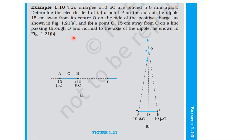From the textbook, topic electric charges and fields, concept example 1.10. Two charges plus or minus 10 microcoulomb are placed 5 millimeter apart. Determine the electric field at: point P on the axis of the dipole 15 centimeter away from its center O on the side of the positive charge, as shown in figure 1.21a; and point P 15 centimeter away from O on a line passing through O and normal to the axis of the dipole, as shown in figure 1.21b.